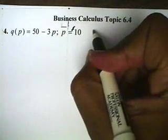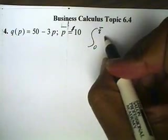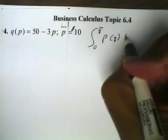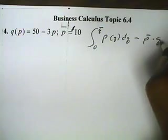Now, consumer surplus formula is 0 to the current demand, and the integral of the price function with respect to Q, minus the current price times the current demand.